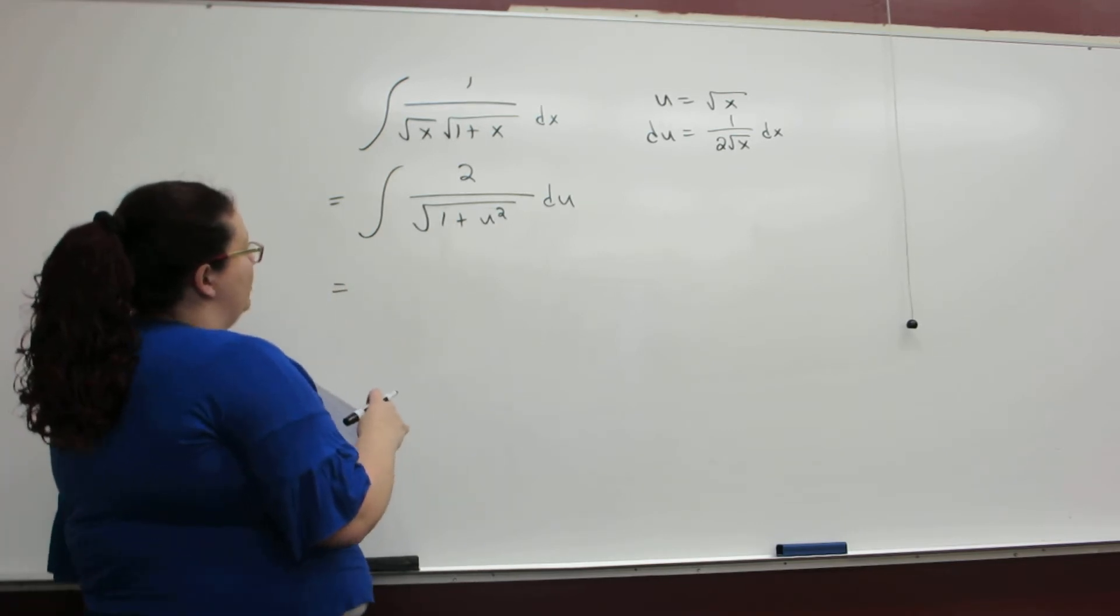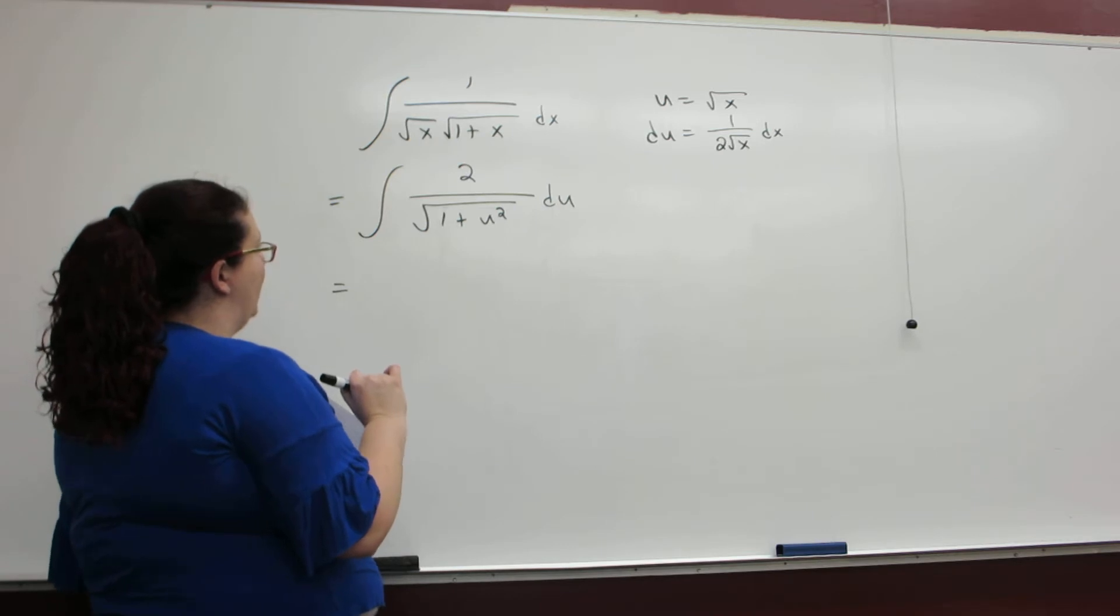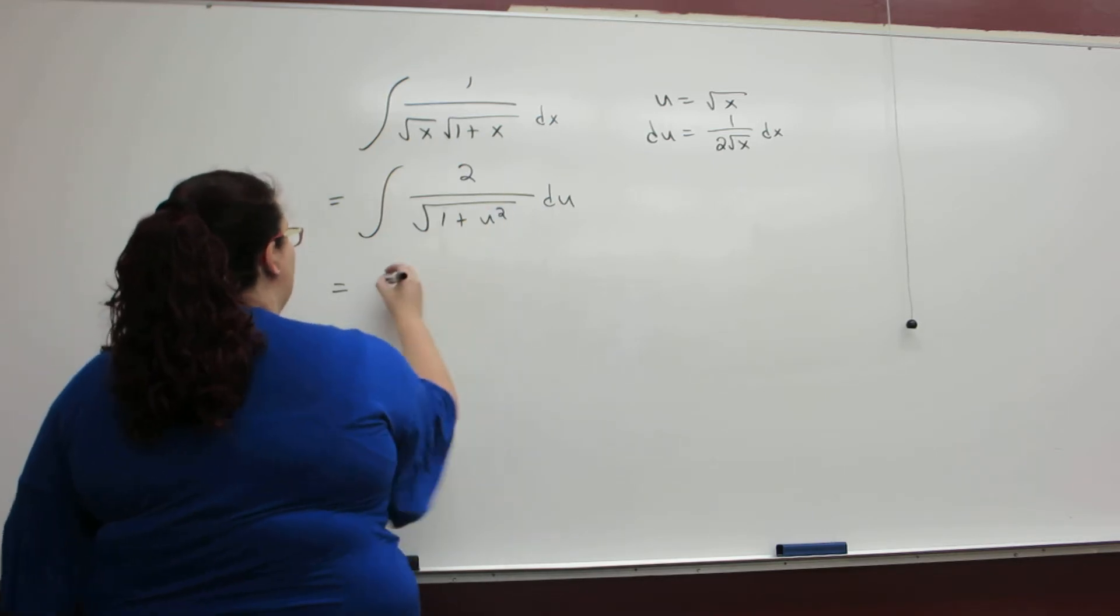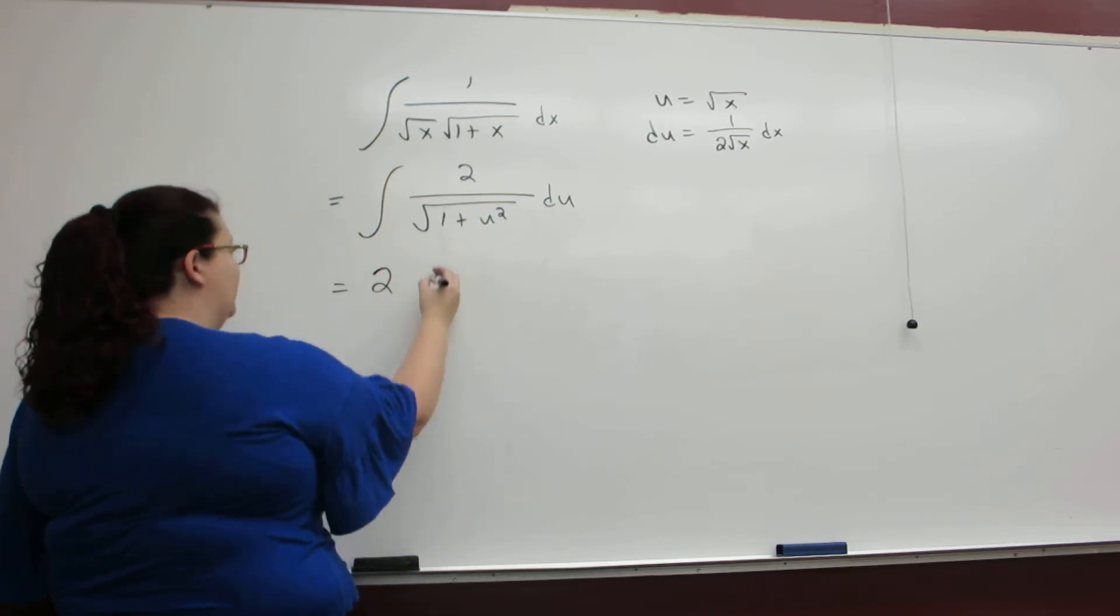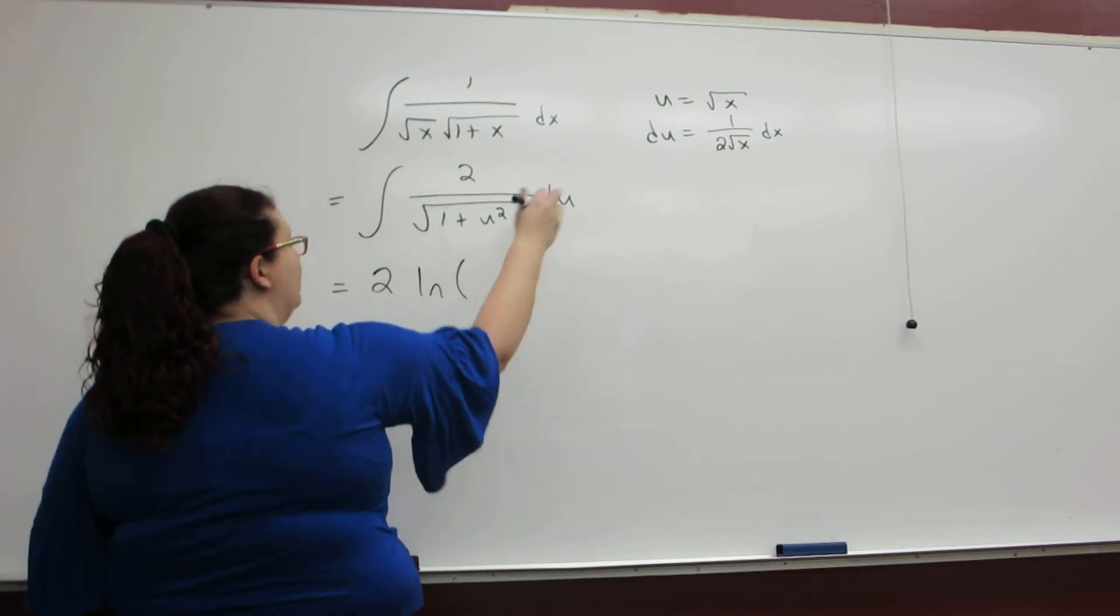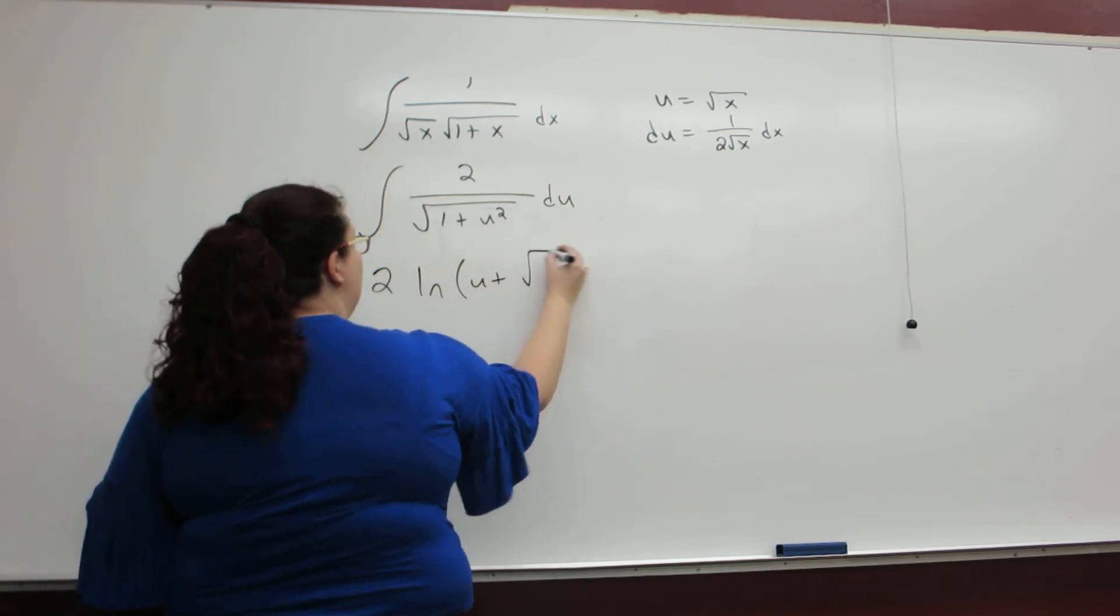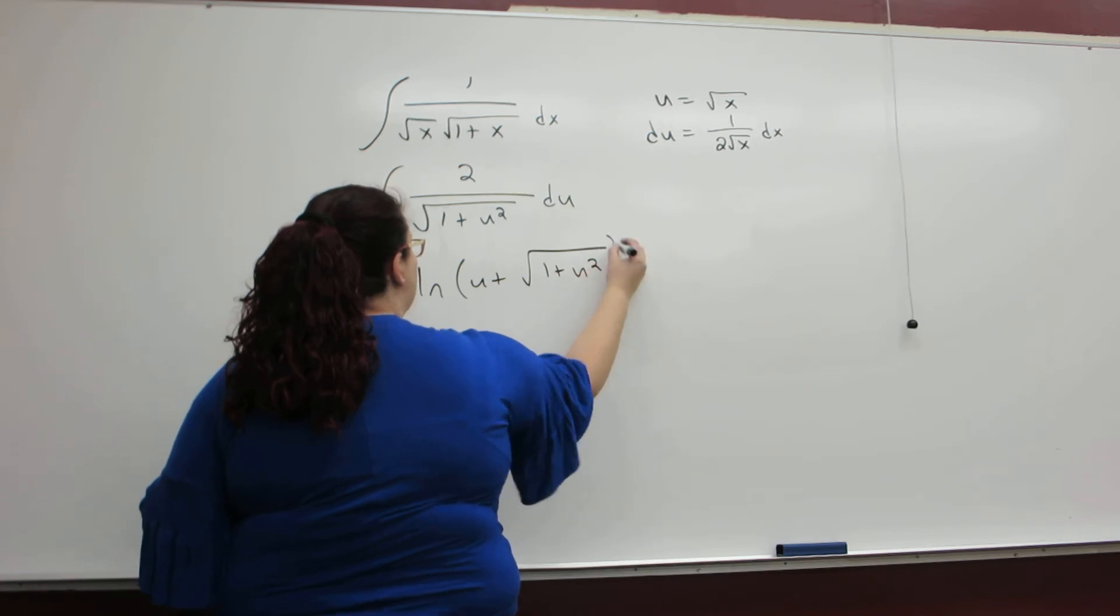Now we're going to use our inverse hyperbolic rules. The 2 comes along for the ride, and we end up with ln of u plus the square root of 1 plus u squared.